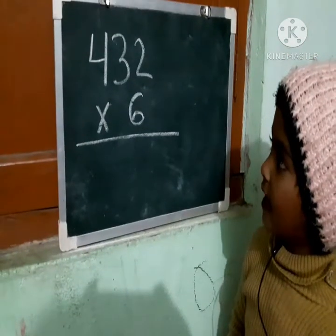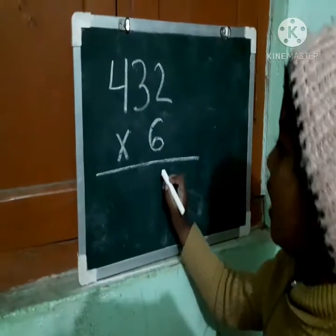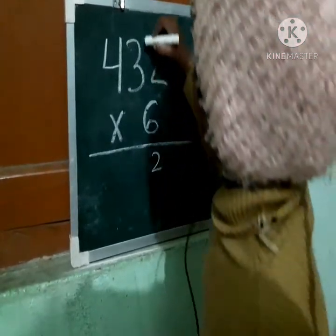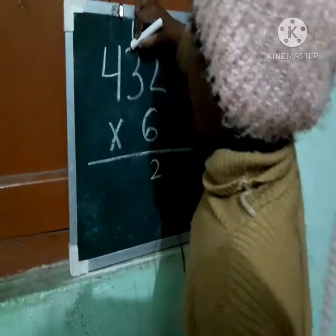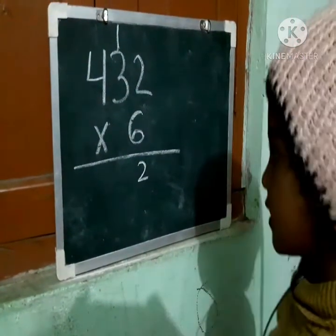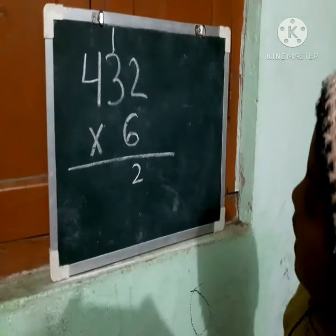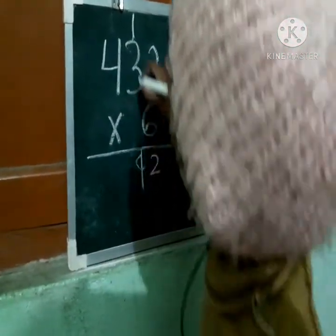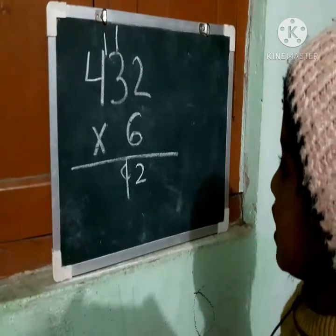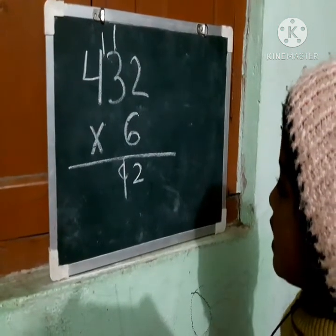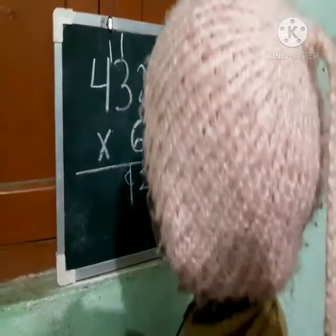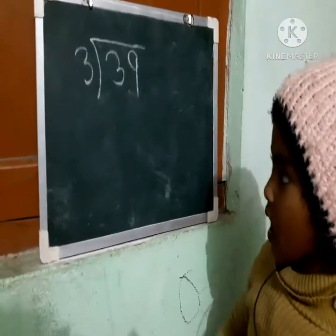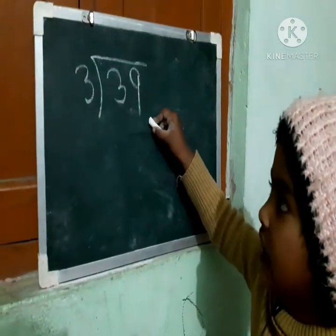Multiply, guys. Now 12 times 6 — 2 multiplied by 6 is 12. Put 2 in the ones column and carry 1 over the 3. 3 multiplied by 6 is 18, plus 1 is 19. 4 multiplied by 6 is 24, plus 1 is 25.